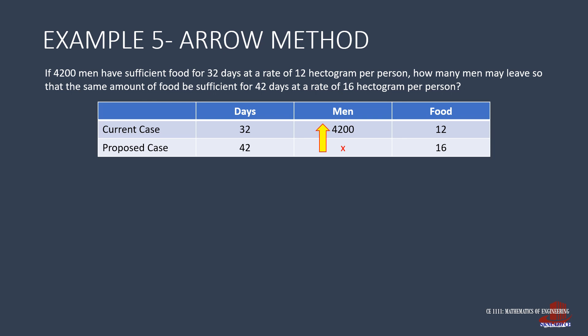Now analyze trends again. With more men eating, there will be lesser number of days for the food to be sufficient, an inverse proportion. The other can be analyzed with the fact that more men will deplete the food faster, meaning smaller proportion of food, an inverse proportion. So the equation to use is X over 4,200 is equal to 32 over 42 for the days, then multiply 12 over 16 for the weight of the food. X is then solved as 32 times 12 by 4,200 and divided by the quantity of 42 times 16.